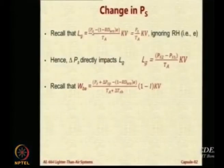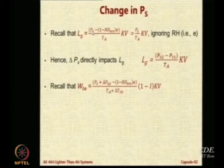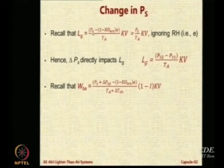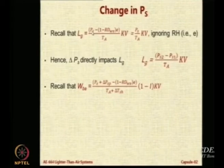We also want to recall that the weight of air in the ballonet was obtained using a similar expression: (PS + delta_PS_p minus the humidity effect) divided by (T_A + T_SH), where delta_PS_p is superpressure and T_SH is the superheat effect. We use (1 minus I) times V because the ballonet volume is (1 minus I)·V. The same calculations done for the lifting gas are repeated for the ballonet, but this complete expression also includes superpressure and superheat.